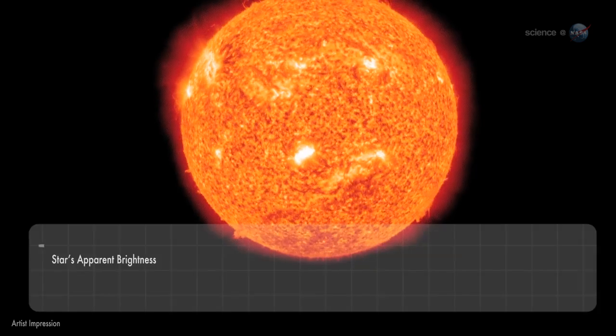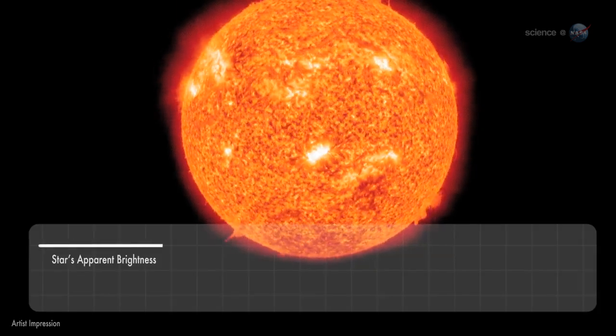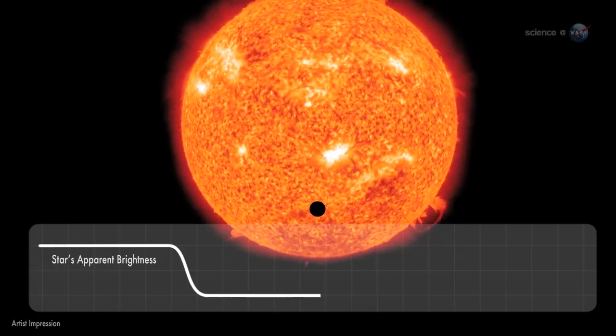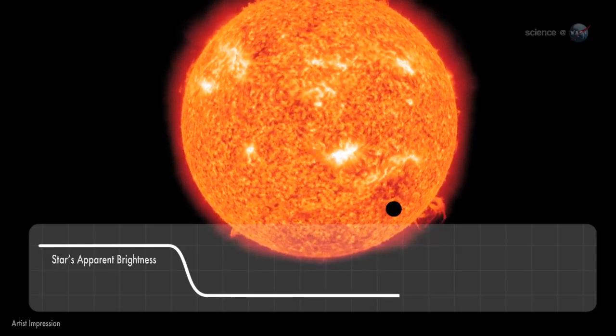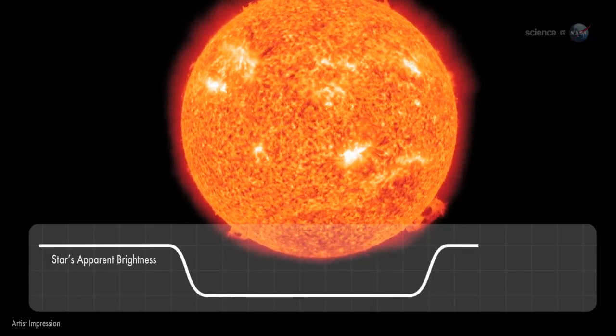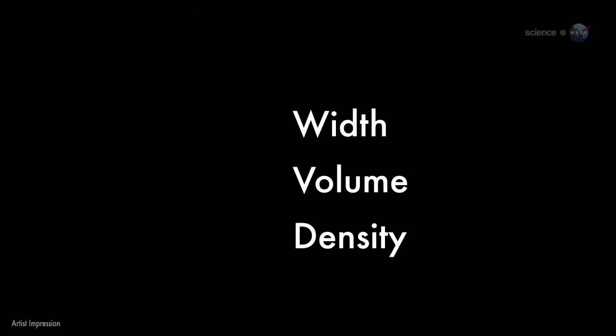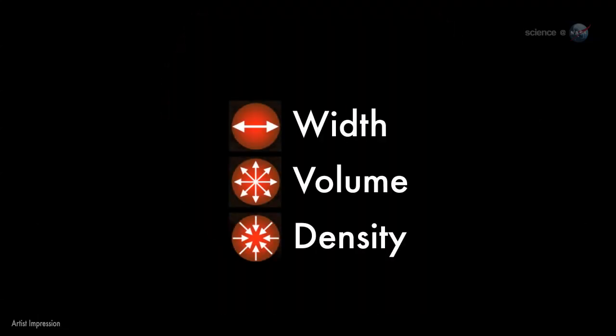Spitzer recently measured the extraordinarily small amount of light 55 Cancri e blocks when it crosses in front of its star. These transits occur every 18 hours, giving researchers repeated opportunities to gather the data they need to estimate the width, volume, and density of the planet.